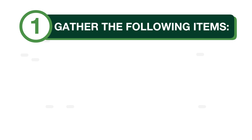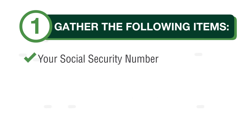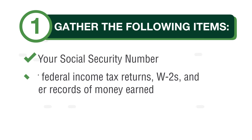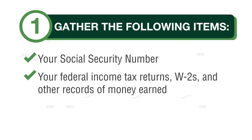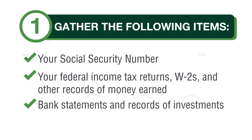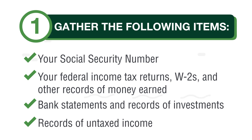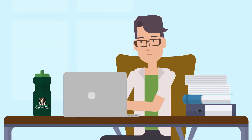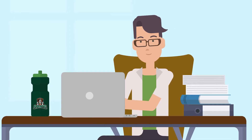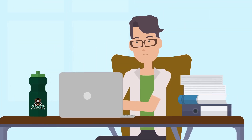Step 1. Take a moment to gather the following items: your social security number, your federal income tax returns, W-2s and other records of money earned, bank statements and records of investments, and records of untaxed income. You'll need to have each handy when filling out the application.